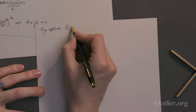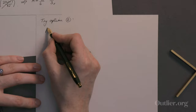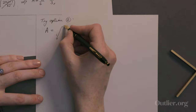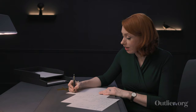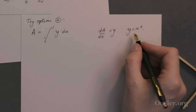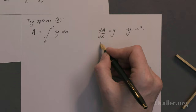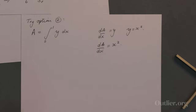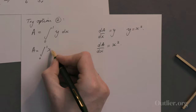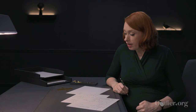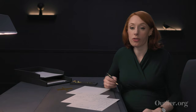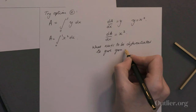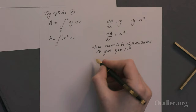Now let's try option two — the neat quick way using integrals instead of summations. A equals the integral between 0 and 1 of y dx. We also know that dA by dx equals y, and that y equals x squared. So putting these together: dA by dx equals x squared, and A equals the integral between 0 and 1 of x squared dx. We're looking for a function A that, when you differentiate it, gives you x squared.